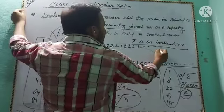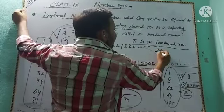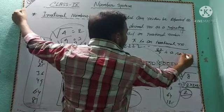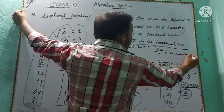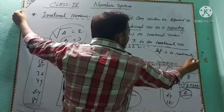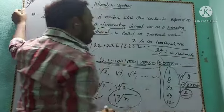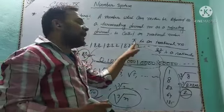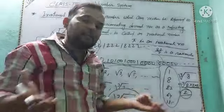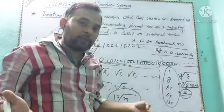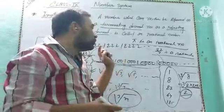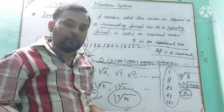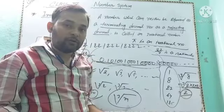So to be clear: π is irrational, but 22/7 is a rational number. They are not equal — 22/7 is just the approximate value we use for π.